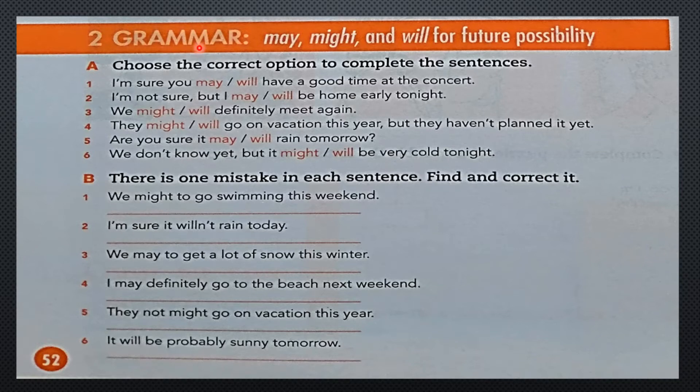Let's continue to grammar: may, might, and will for future possibility. Choose the correct option to complete the sentence. In the first case it is: I'm sure you may or will have the time to come to the concert. We're going to remember that may and might we use for sentences when we are not sure what's going to happen. However, will works for something more certain, pretty sure. It also works with the words definitely and probably. So for that review, let's work through the exercises. Number one would be will, because he is completely sure about what he's doing.